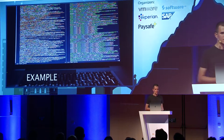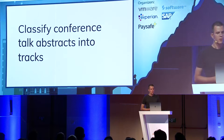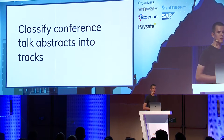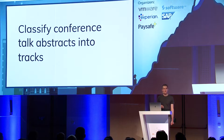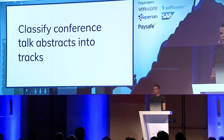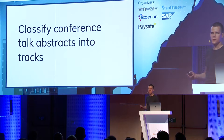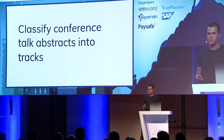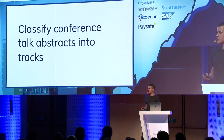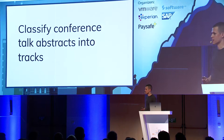Now the example. Today we're going to classify conference talk abstracts into tracks. On some conferences there are topic tracks like backend, frontend, mobile, big data, et cetera. I have gathered abstracts from a few conferences and put them in a CSV file. There is basically a track name, a unified track name, a title, and the text. For this we're going to use Apache Spark.